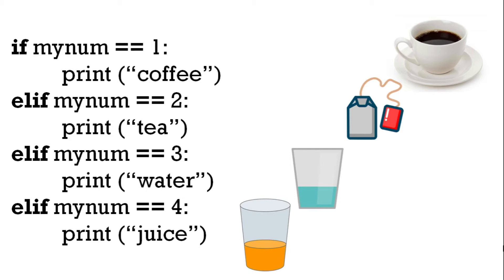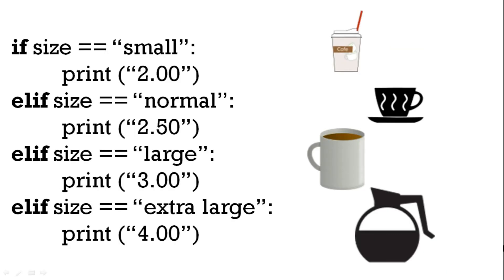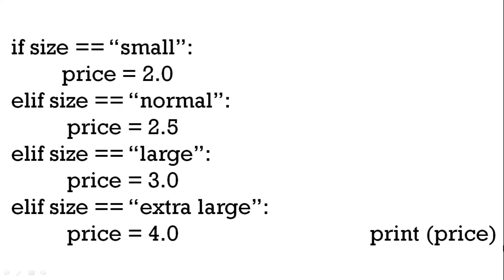In another example — small, normal, large, extra large — we use if, elif, elif, elif again the same way. We can change that example so instead of printing we just change the variable price to 2, 2.5, 3, and 4, and then just print the price. That's the same example but using a variable.